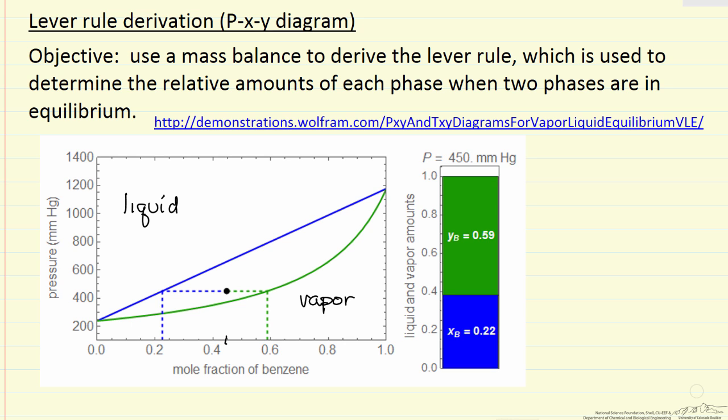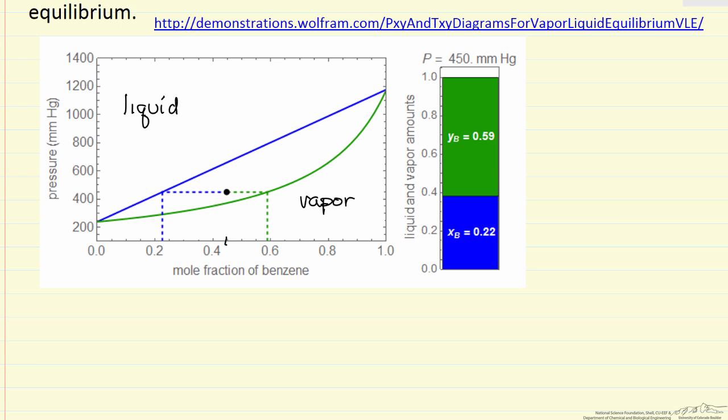But we want to determine how that calculation, the lever rule, arrives, how it was derived. And what we're going to do for the lever rule is say the total number of moles of one of the components, so the total moles of B is equal to the moles of B in the liquid plus the moles of B in the vapor. So just a mass balance on B, it has to be in either liquid or vapor.